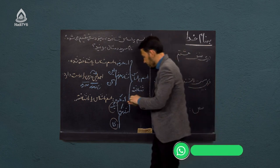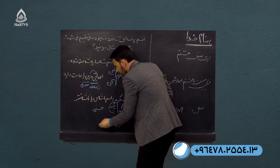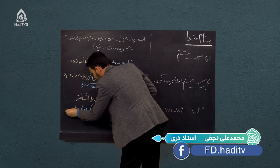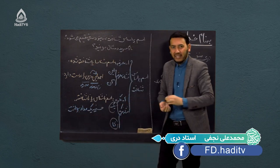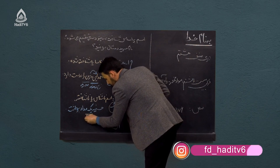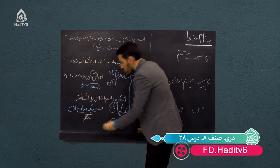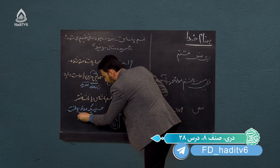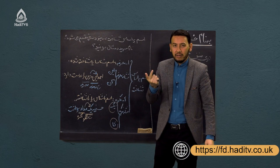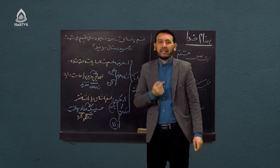مثال می‌زنیم: حسنیه یک مداد برداشت. «یک» گفتیم نشانه نکره است، اسم بعد از نشانه نکره می‌شود اسم نکره. «مداد» شد نکره چون قبلش نشانه «یک» آمده. همچنین می‌تواند یک «یاء» بیاید که تحت عنوان یای نکره از آن یاد می‌کنیم. هر زمانی که یک اسم نکره «یا» را به خود بگیرد باز هم می‌شود اسم نکره.